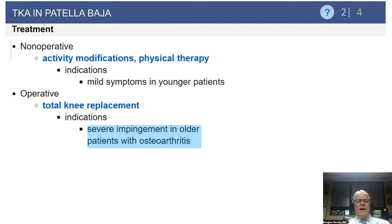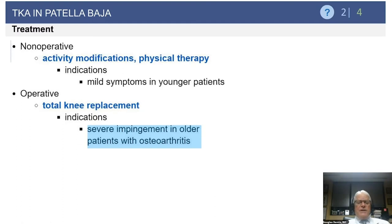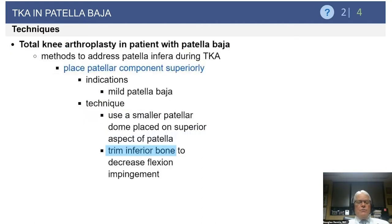How do you treat patellar Baja? Non-operatively, you try activity modifications, particularly those activities with high loading on the patellofemoral joint — stair-walking, squatting, and kneeling. Physical therapy to strengthen the quad can be tried, though it has not been found to be terribly helpful in symptomatic patellar Baja. Operatively, total knee replacement can be entertained more in older patients who have associated arthritis with severe impingement due to their patellar Baja.